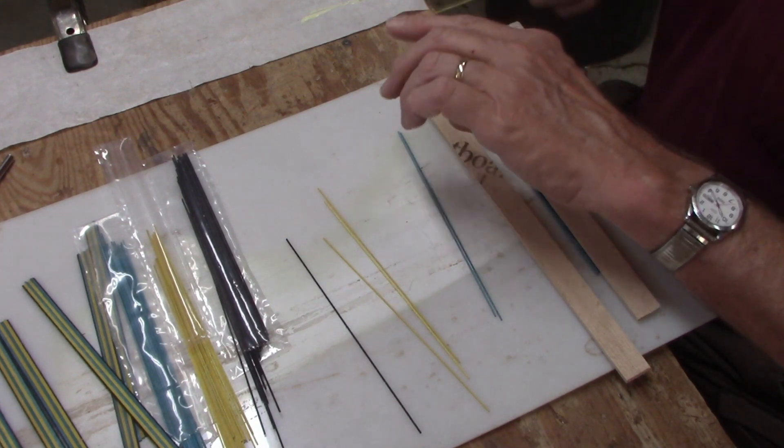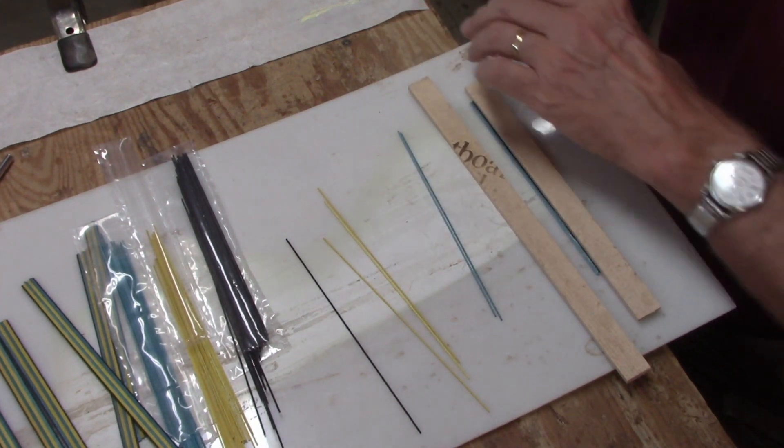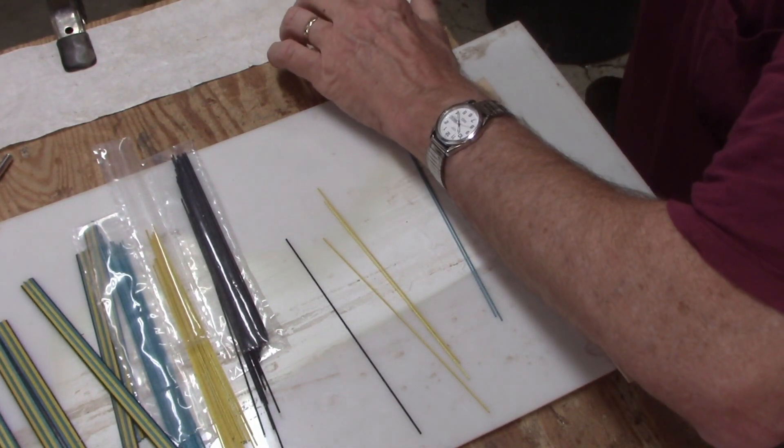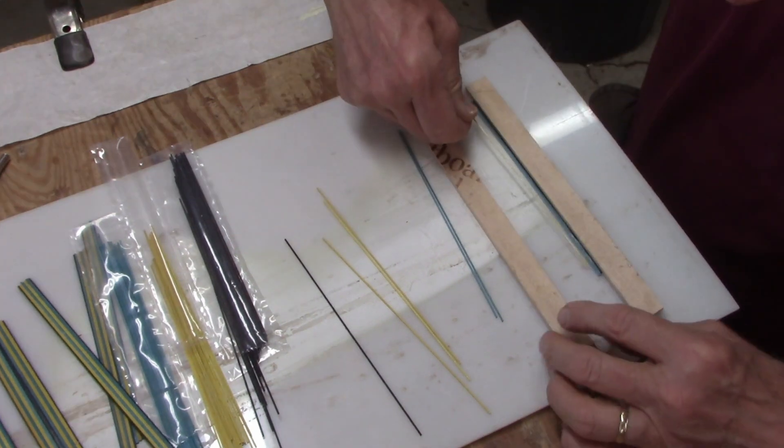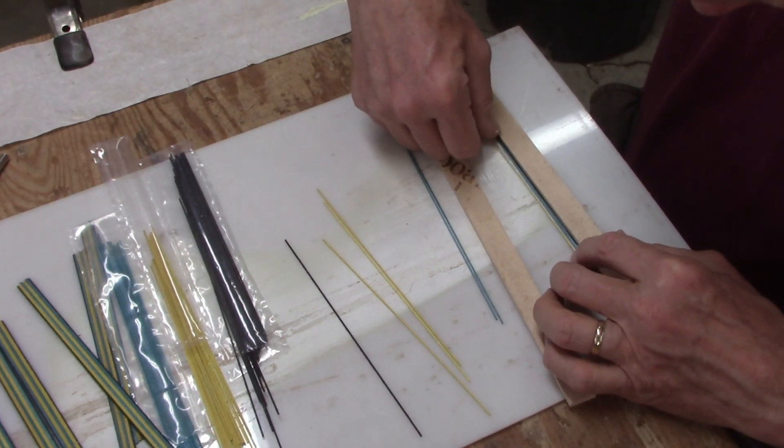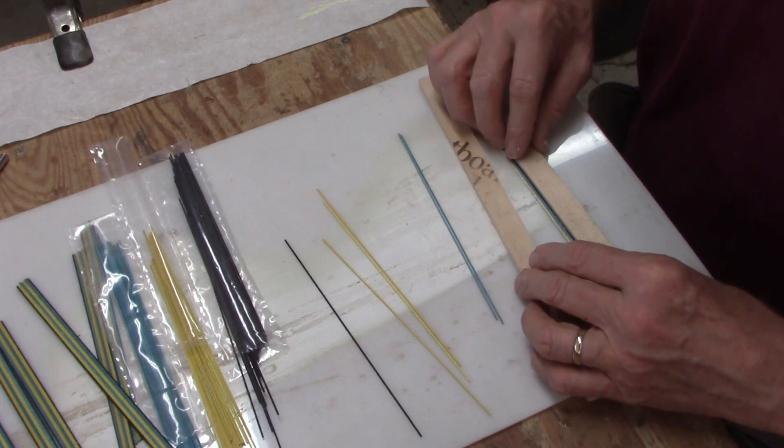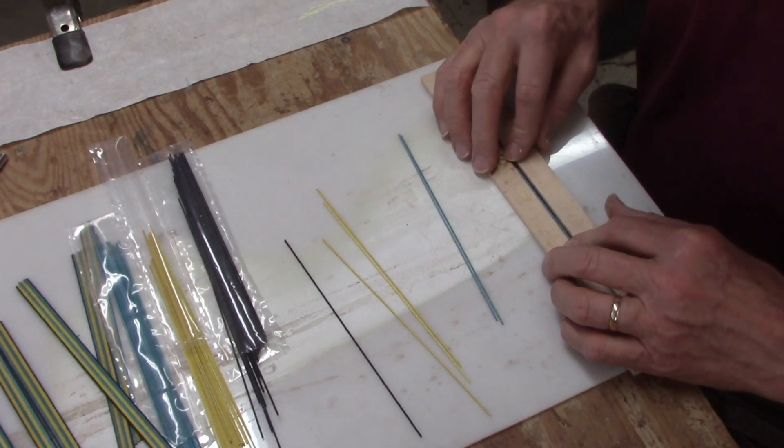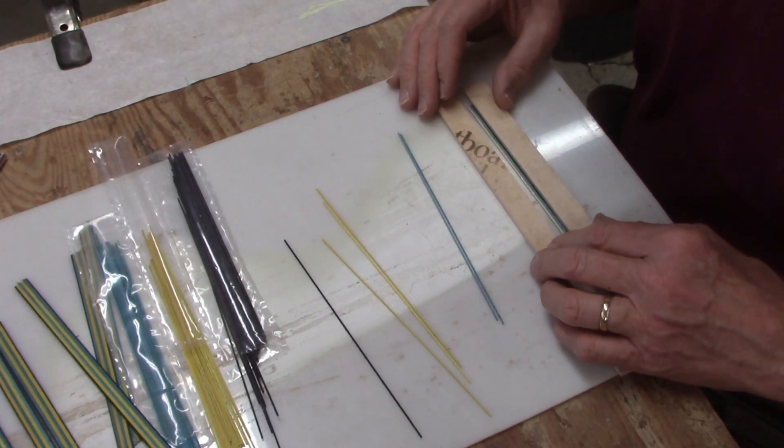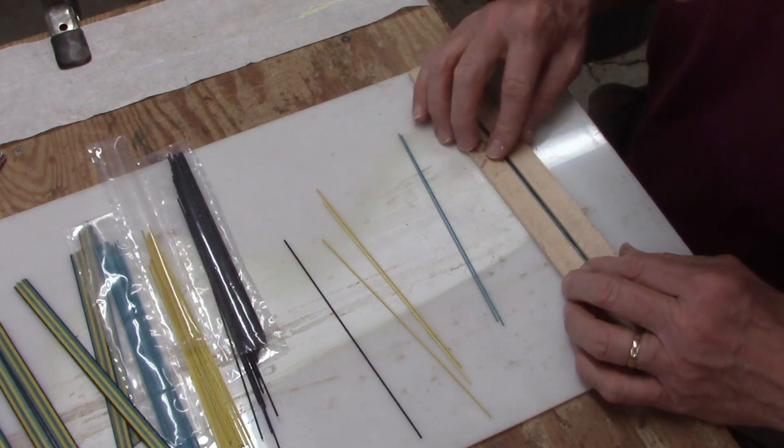I use yellow glue because it gives me a little bit longer setup time than white glue would. So this is the idea. I'm not going to show much more of this step than what I already have because it's just the same thing over and over again.